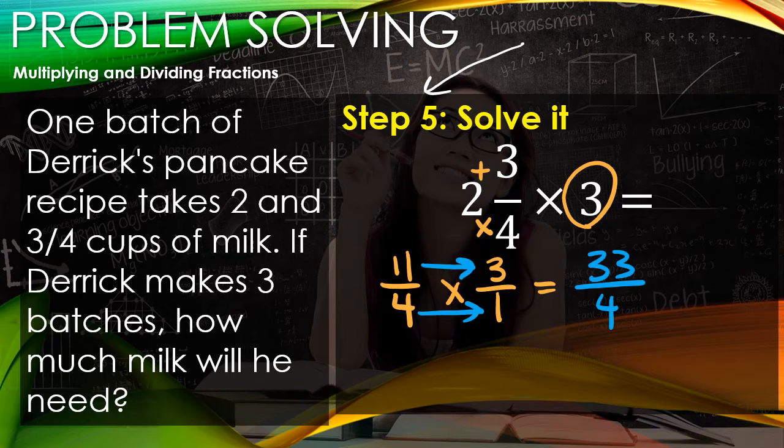The way we do this is with some long division. 4 goes into 33 eight times with a remainder of 1.